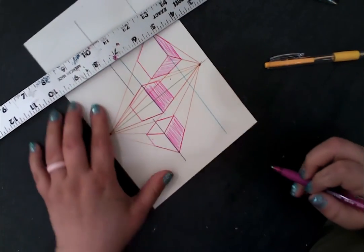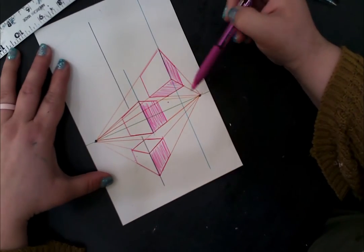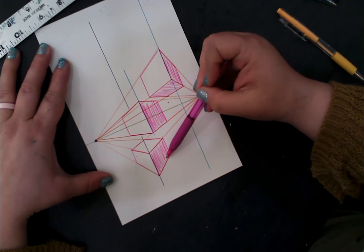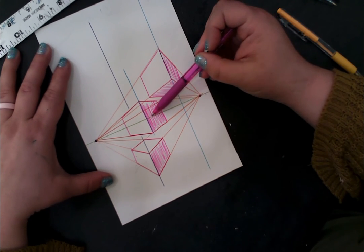So now we have three boxes or rectangular prisms below the horizon line, on the horizon line, and above the horizon line.